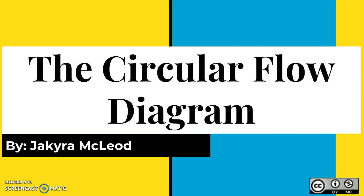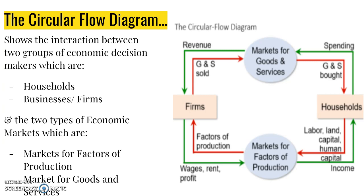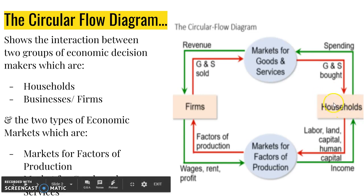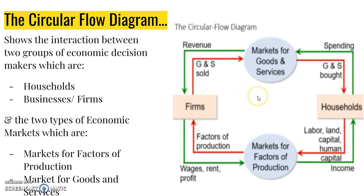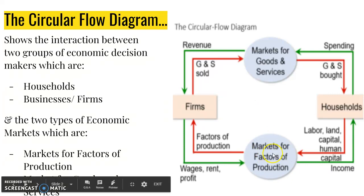As we all should know, or will learn today, the Circular Flow Diagram is a well-known economic model. It shows the interaction between two groups of economic decision makers — households and firms, also known as businesses — and the two types of economic markets: markets for the factors of production and markets for goods and services.